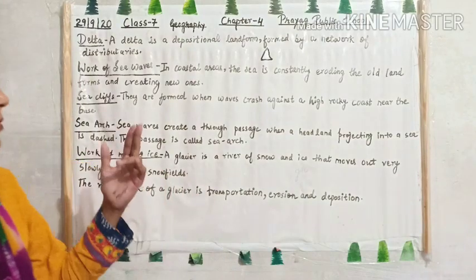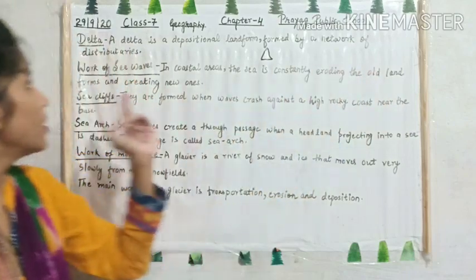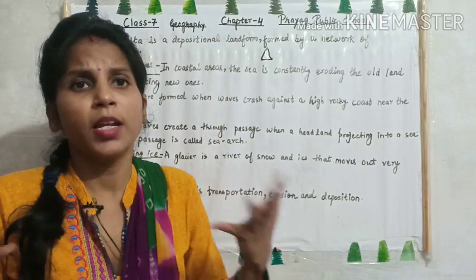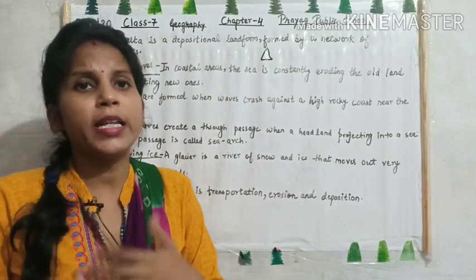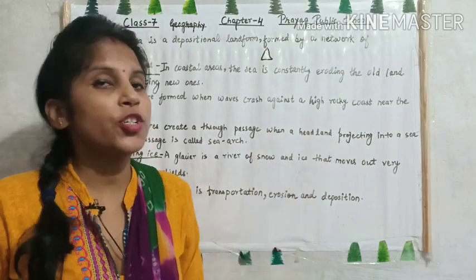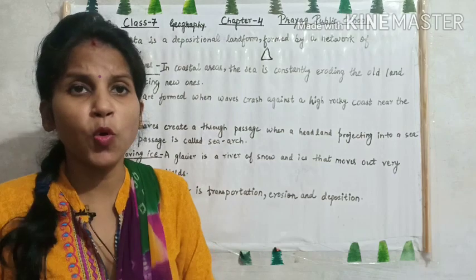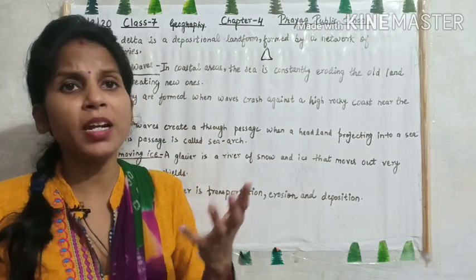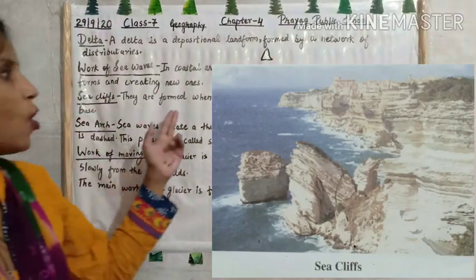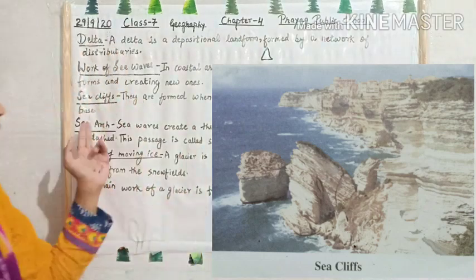Now, work of sea waves. In coastal areas, the sea is constantly eroding old landforms and creating new ones. In coastal areas, sea waves continuously carry out erosion and weathering, removing old landforms and continuously changing the landscape.